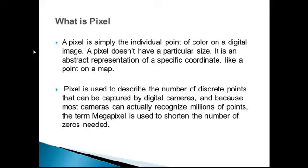Pixel is used to describe the number of discrete points that can be captured by a digital camera. And because most cameras can accurately recognize millions of points, the term megapixel is used to shorten the number of zeros needed.